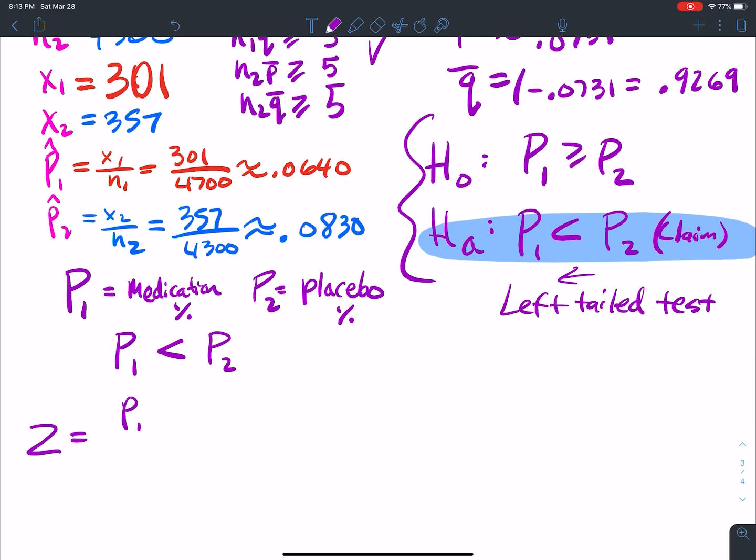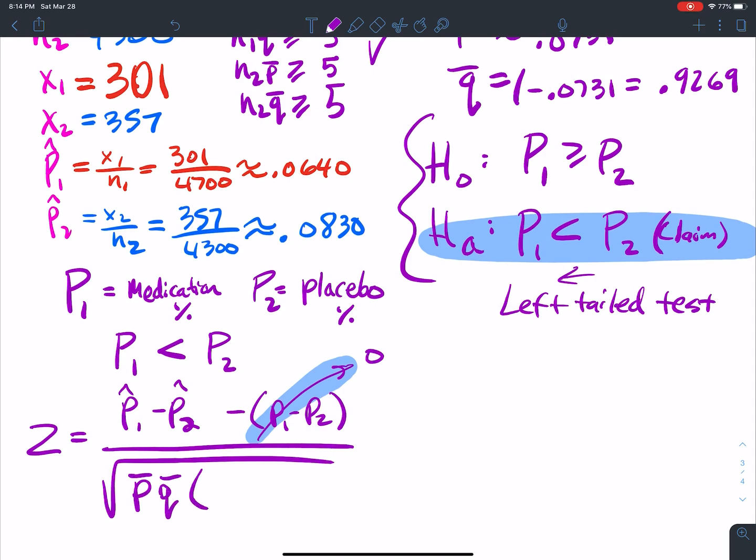Z equals P1 hat minus P2 hat, and then minus P1 minus P2, but what do we know about this? This thing is going to zero in the H0. We assume that there's no difference. So I have P bar, Q bar, and 1 over n1 plus 1 over n2.